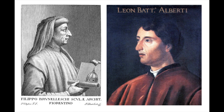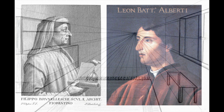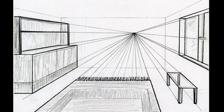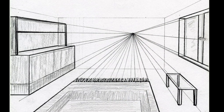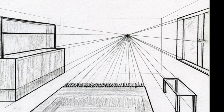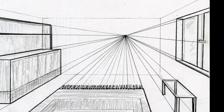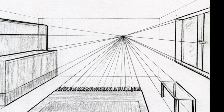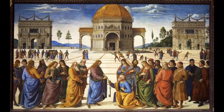Fast forward over a thousand years, and we find Renaissance artists like Filippo Brunelleschi and Leon Battista Alberti exploring this idea of linear perspective, or how to depict a three-dimensional scene on a flat surface. Brunelleschi and Alberti recognized that parallel lines appear to meet in the distance, and they called this spot the vanishing point.